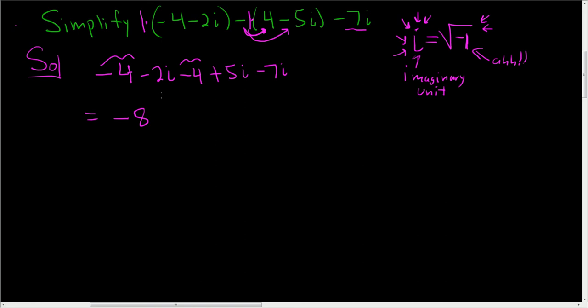Yeah, it looks right. And now we combine the i's. So minus 2i plus 5i. You know what, I'm going to do this in two steps. Minus 2i plus 5i is 3i.